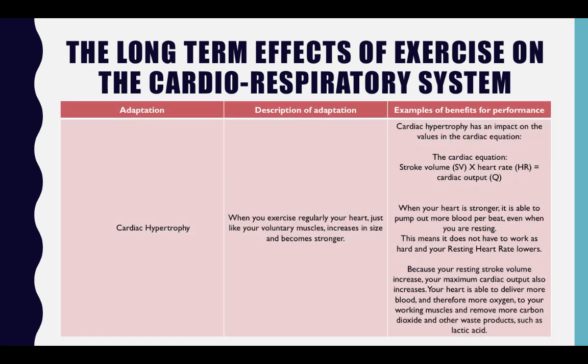Cardiac hypertrophy: when you exercise regularly, your heart, just like the voluntary muscles, increases in size and becomes stronger. Cardiac hypertrophy has an impact on the values in the cardiac equation: stroke volume × heart rate = cardiac output. When your heart is stronger, it is able to pump out more blood per beat even when resting, so your resting heart rate lowers. Because your resting stroke volume increases, your maximum cardiac output also increases. Your heart can deliver more blood and therefore more oxygen to your working muscles, and remove more carbon dioxide and waste products such as lactic acid.